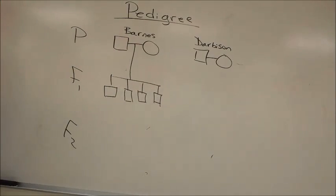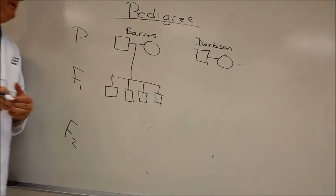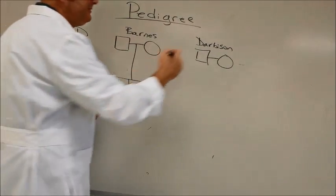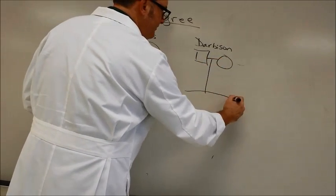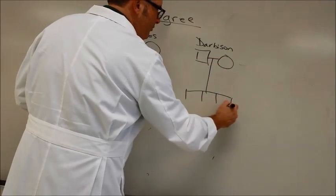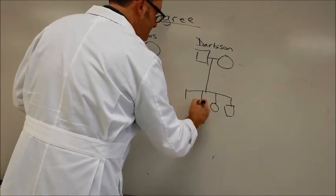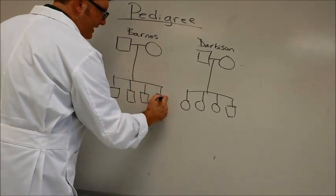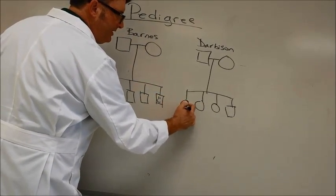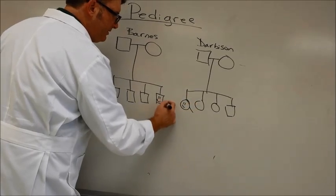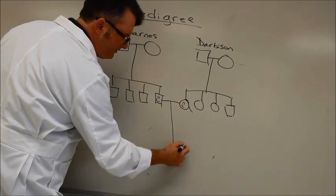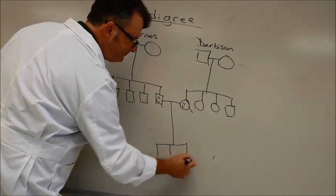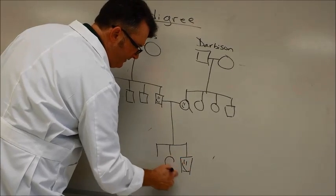Also, the line between two people indicates that these people are reproductive partners. The Darbyson's had four children as well: one boy and three girls. And my dad married the youngest Darbyson girl and had three children.